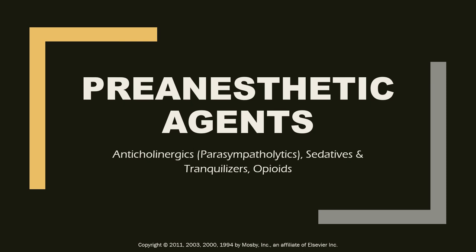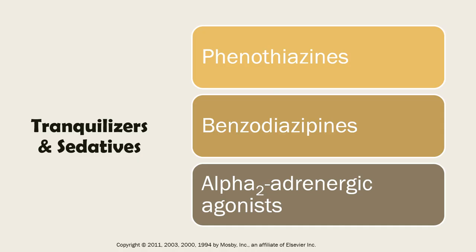Welcome to our presentation on the pre-anesthetic agents. This presentation will focus on the alpha-2 agonist. There are three main groups of tranquilizers and sedatives that can be used as a pre-anesthetic agent: the phenothiazines, the benzodiazepines, and the alpha-2 adrenergic agonists.